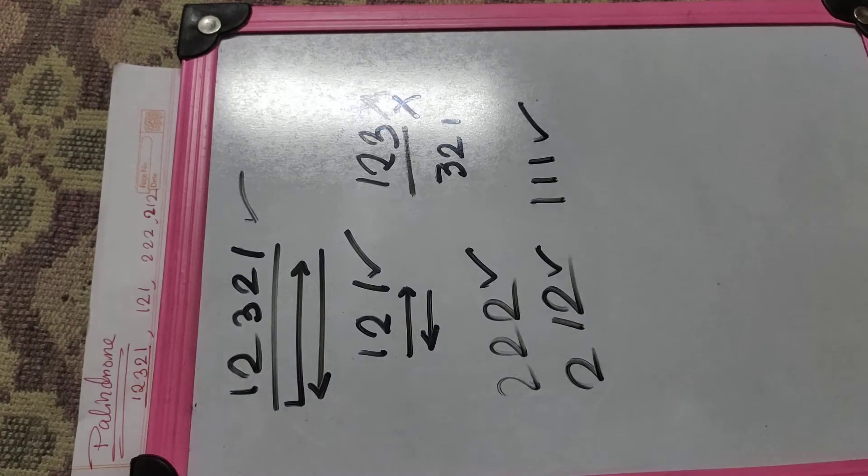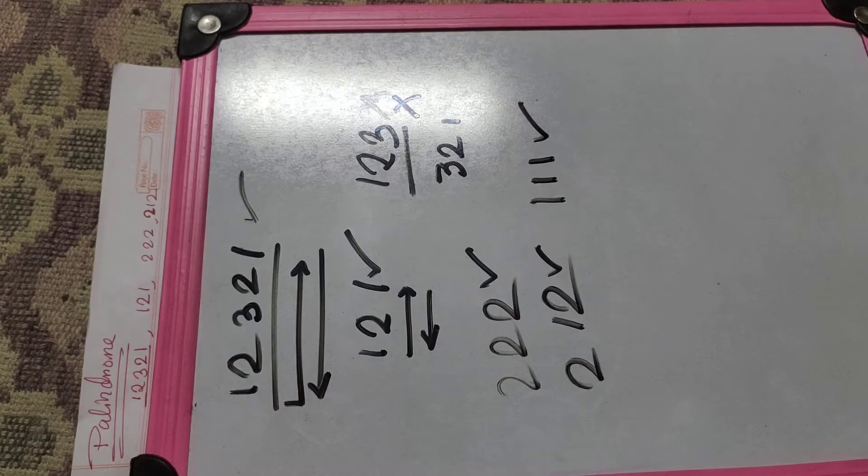First we have to accept a number and then we have to reverse the position of the digits. That's the process.